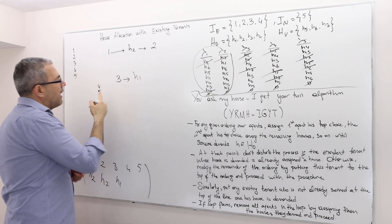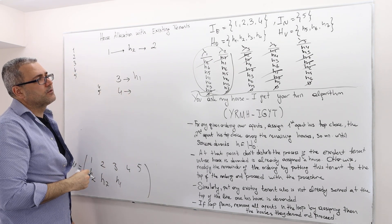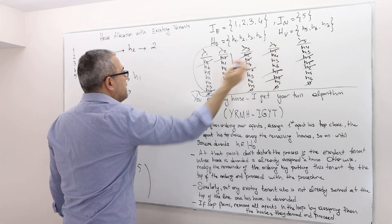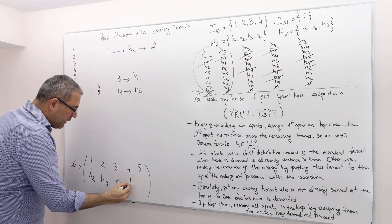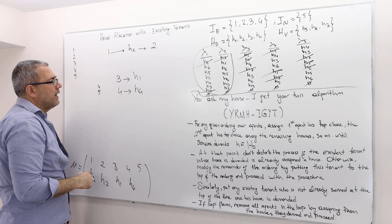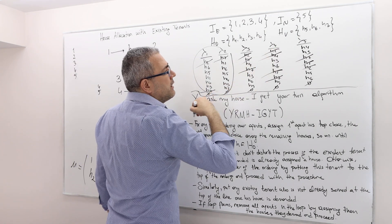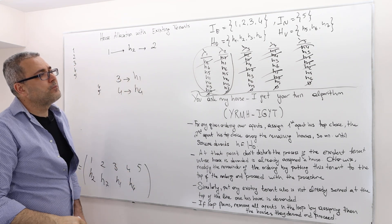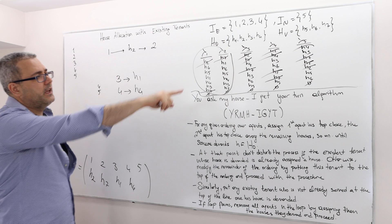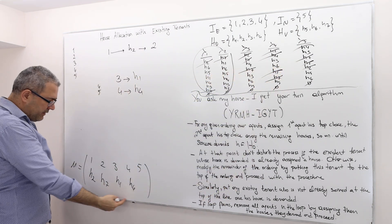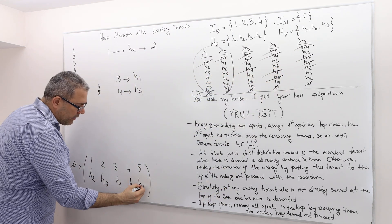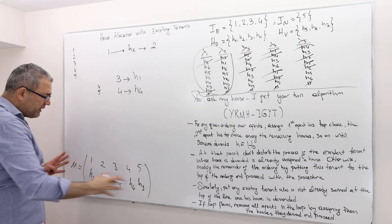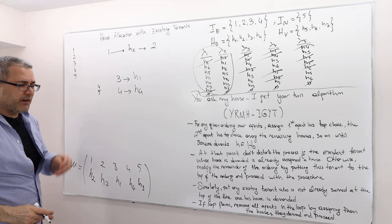Agent 4's top choice among the remaining houses is H4, so he gets his own house. Once that's settled, agent 5 says house 3, which is now vacant — matched to no one. So agent 5 is matched with house 3. This is the complete matching under the ordering 1, 2, 3, 4, 5.